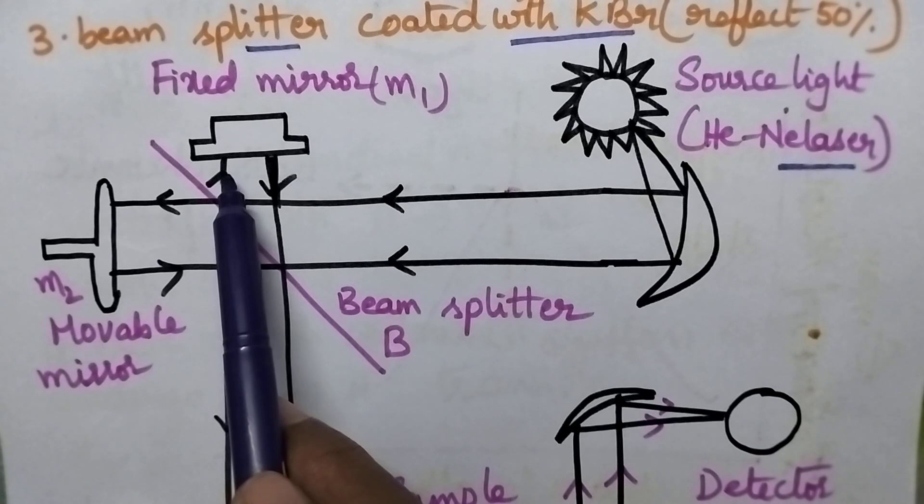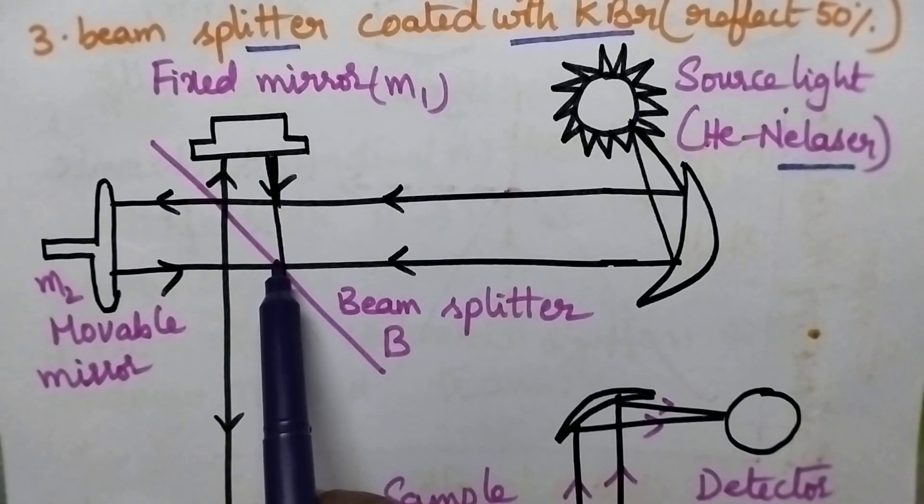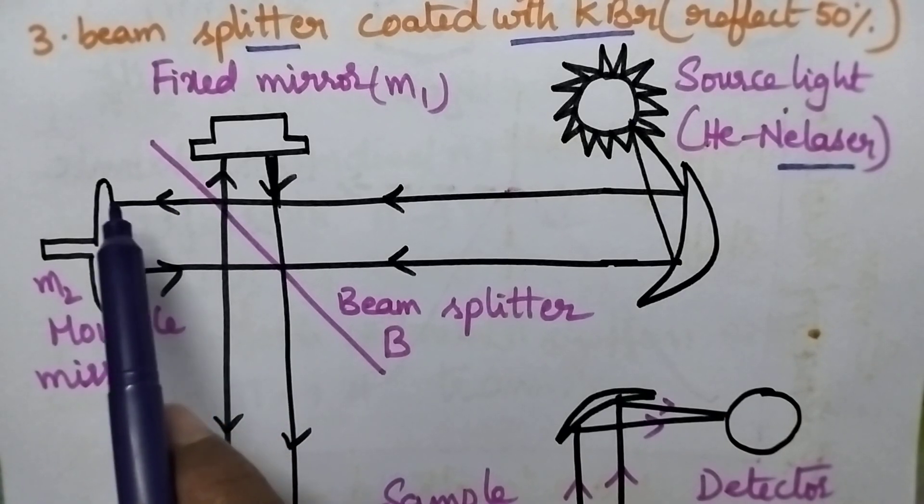One beam is passed towards the fixed mirror and that will be reflected back to the beam splitter, and the other radiations will be passed through the movable mirror.